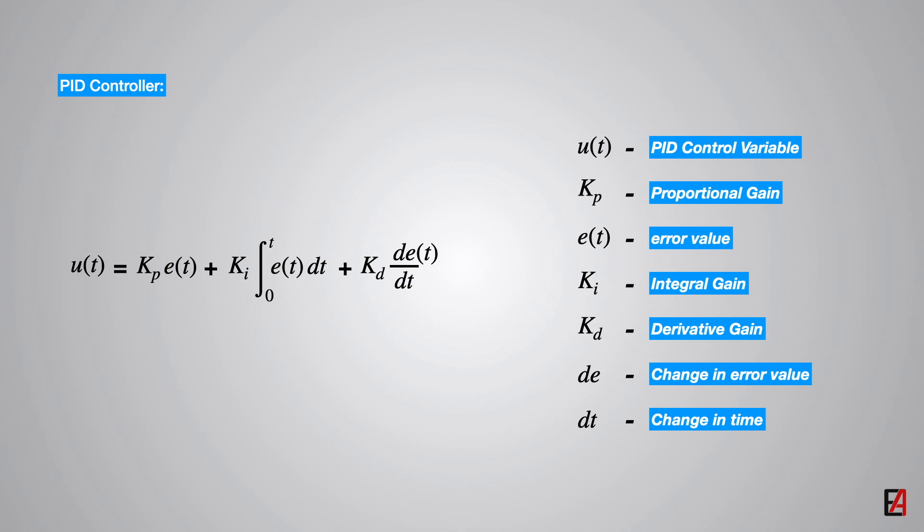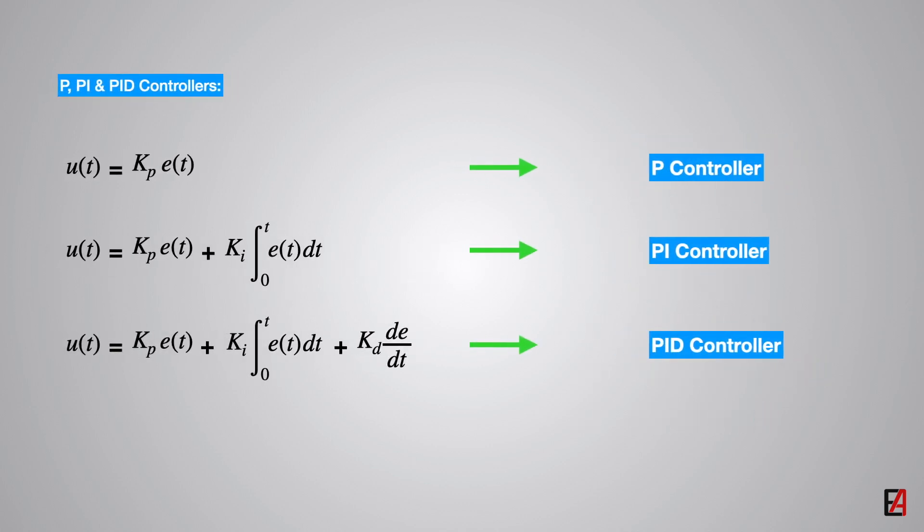The PID controller can be used in the following three combinations. First one is the P controller, that is the proportional controller. As the name sounds, only proportional gain is used.